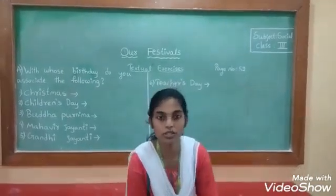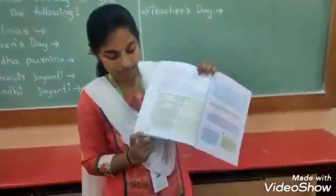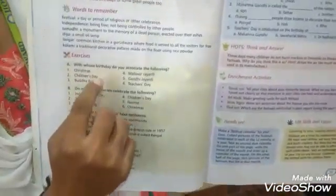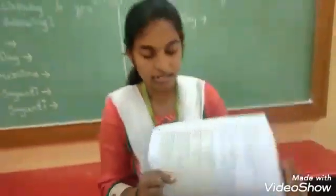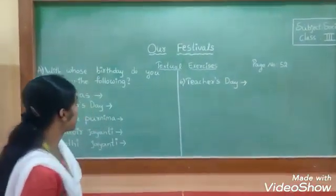So today we are going to discuss about the textbook exercises. You can refer to page number 52. The first exercise is Exercise A. As I tell you the answers, please note down the answer beside the question. You have some space here so you can note down there. Now let's get started and see what the first exercise is.